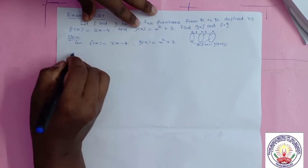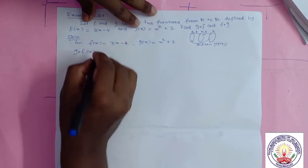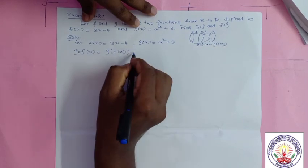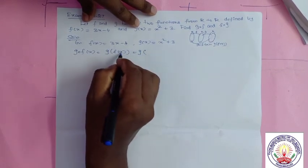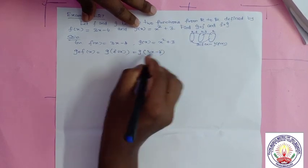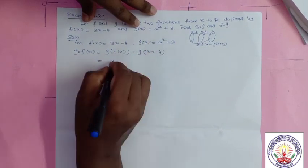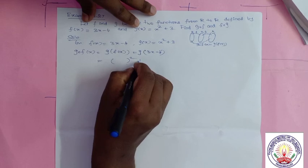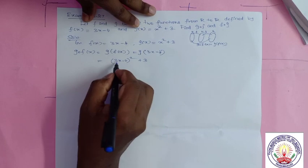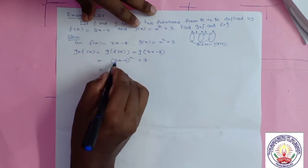Now I am going to find g composition f of x. That means g∘f(x) = g(f(x)) = g(3x - 4). Now g of something means square the something and add 3. What is inside? 3x - 4. So we have (3x - 4)², which is of the form (a - b)². Using a² - 2ab + b²: